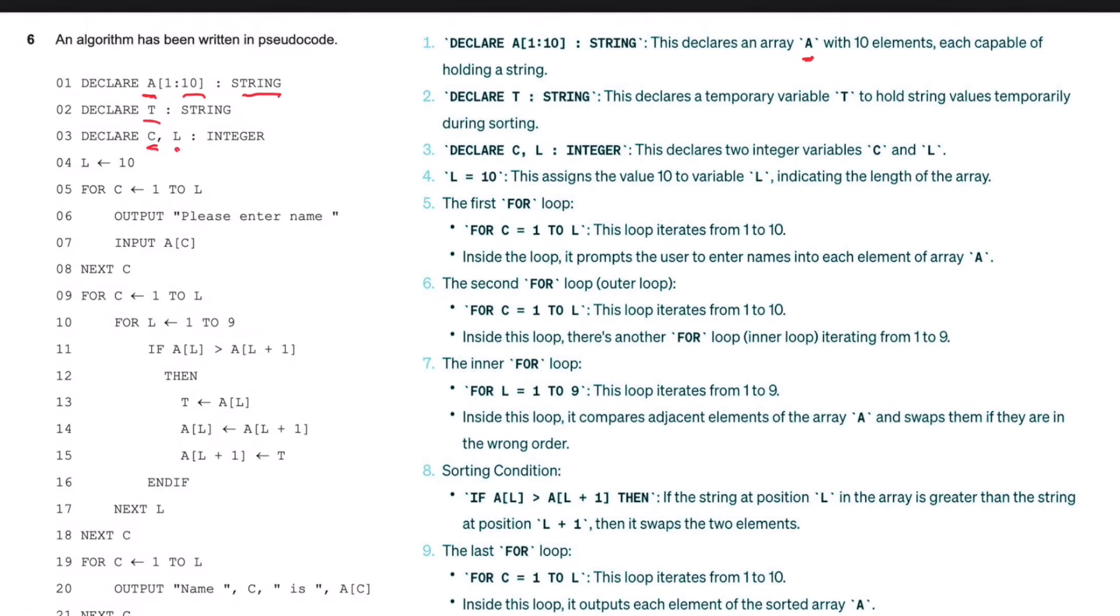This declares an array A with ten elements, each capable of holding a string. Declare T as a string - this declares a temporary variable called T to hold string values temporarily during sorting. Declare C and L as integers. L has been assigned the value 10, indicating the length of the array. The first for loop, C has been assigned the value 1 to L. This loop iterates from 1 to 10. Inside the loop it prompts the user to enter names in each element of array A. So it's going to output a message please enter names and input them, and because it's a for loop from 1 to 10 it's going to do this 10 times.